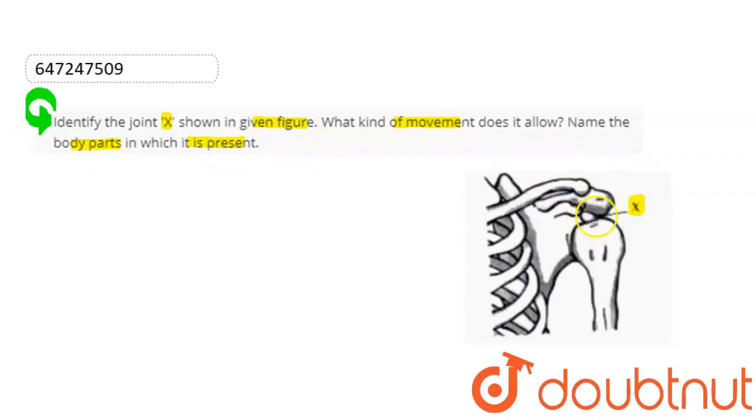So, we have to tell here what kind of movement it allows and we have to tell the body parts where it is present.